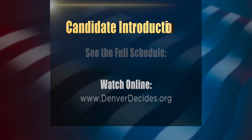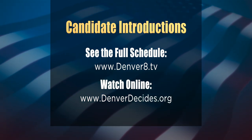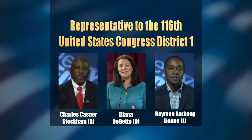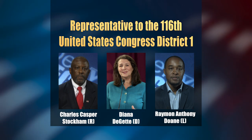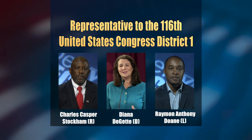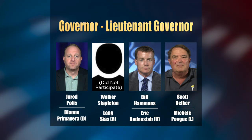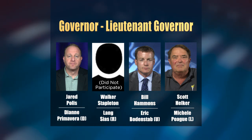Welcome back to Denver Decides. Now let's take a look at the candidates. The candidates for most of these offices were given the opportunity by our Denver Decides partners to introduce themselves and participate in candidate forums, available on Denver 8 TV and at denverdecides.org. For Representative to the 116th United States Congress, District 1, the choices are Republican Charles Casper Stockham, Democrat Diana DeGette, and Libertarian Ramon Anthony Doan. For Governor and Lieutenant Governor, the choices are Jared Polis, Democrat, with running mate Diane Primavera; Walker Stapleton, Republican, with Lang Sias; Bill Hammonds of the Unity Party of Colorado with Eric Bodenstaub; and Scott Helker, Libertarian, with running mate Michelle Pogue.